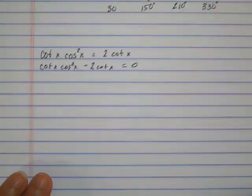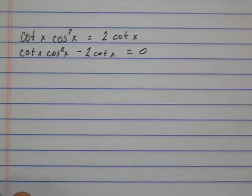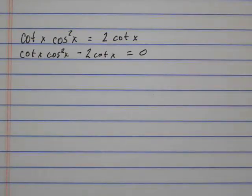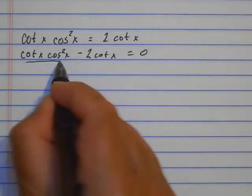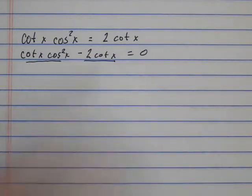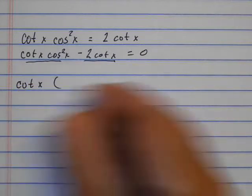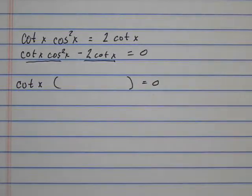So this one looks a little more difficult because there isn't a clear trig function that we're using. We have cotangents and cosines. But I see that this is equal to 0, and both of these terms have a cotangent. So I'm going to start by factoring. I'm going to factor a cotangent out and see what's left.